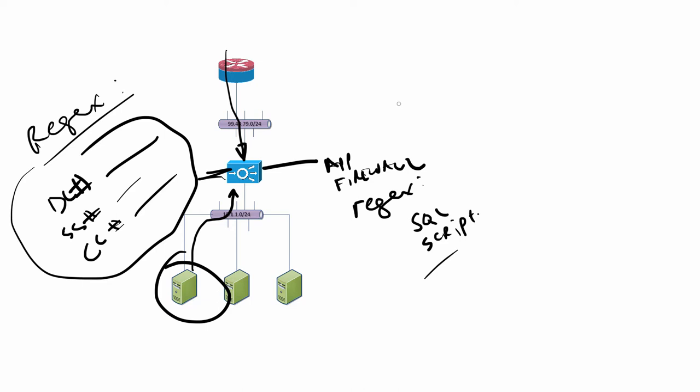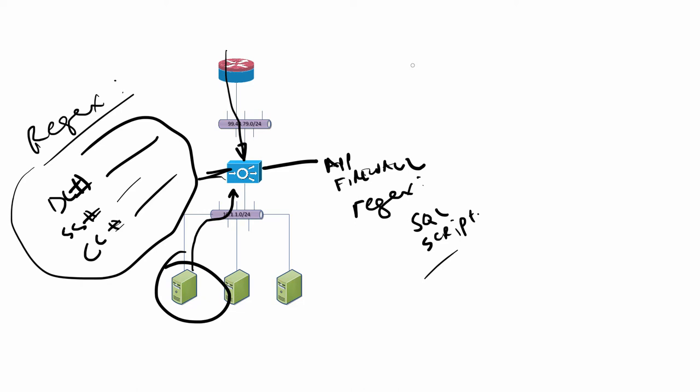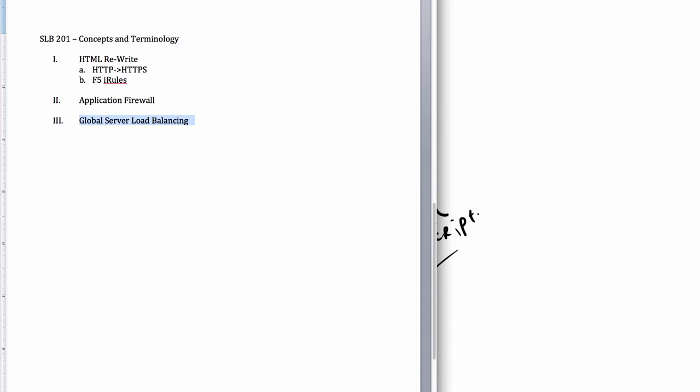The next thing I want to talk about is global server load balancing — GSLB. It's a fairly complex topic, but I'll scratch the surface based on my experience selling GSS, which was Cisco's global server load balancer. Before diving into GSLB, you really need to understand how DNS works.